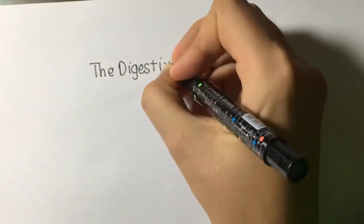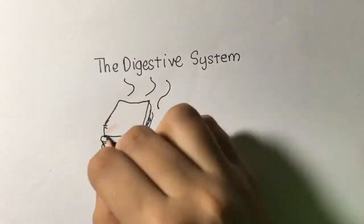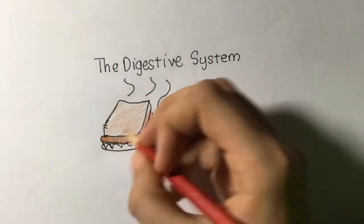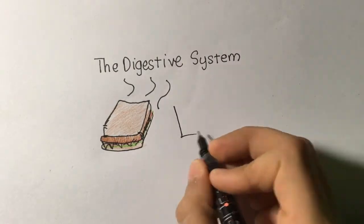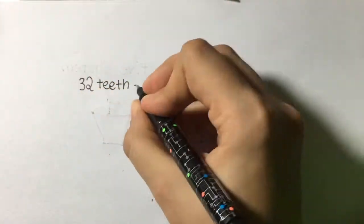Hey guys, Dab Science here with a video on the digestive system. Let's say you have a delicious sandwich in your hand and then you take a huge bite out of it. First, our 32 teeth immediately begin to break down the food.